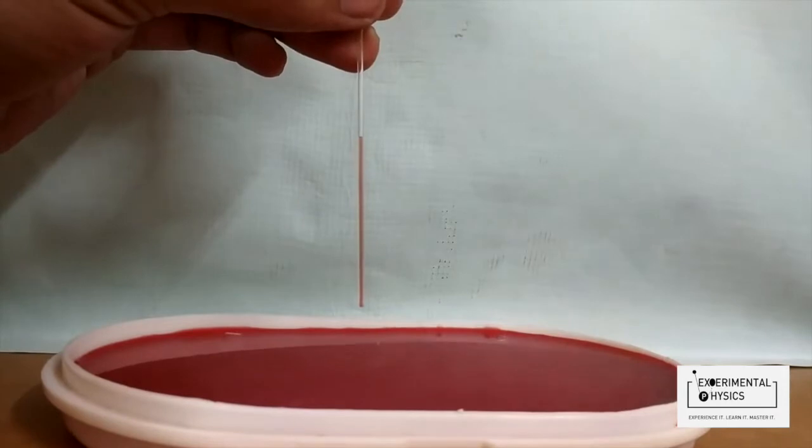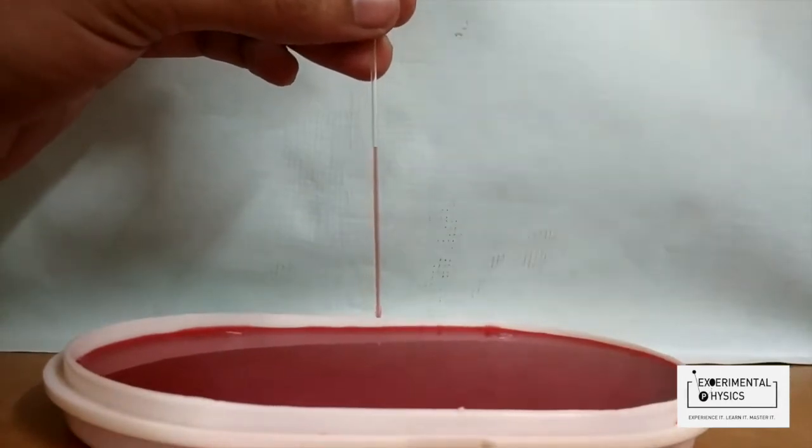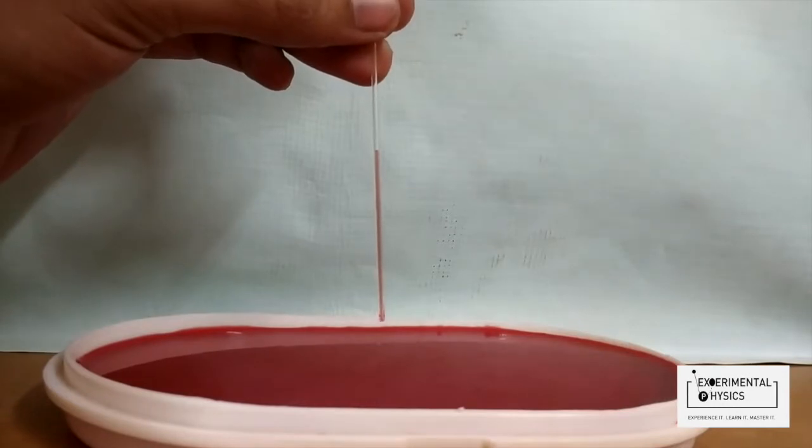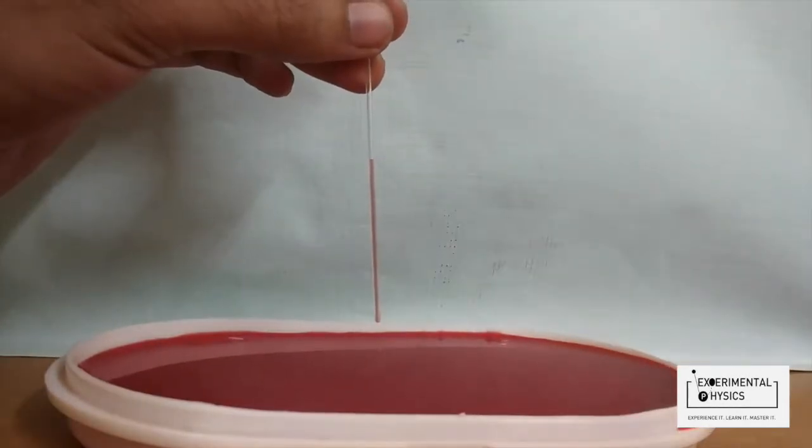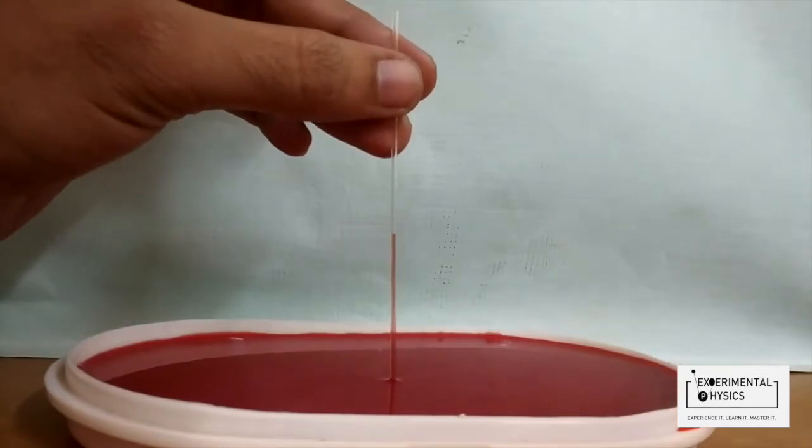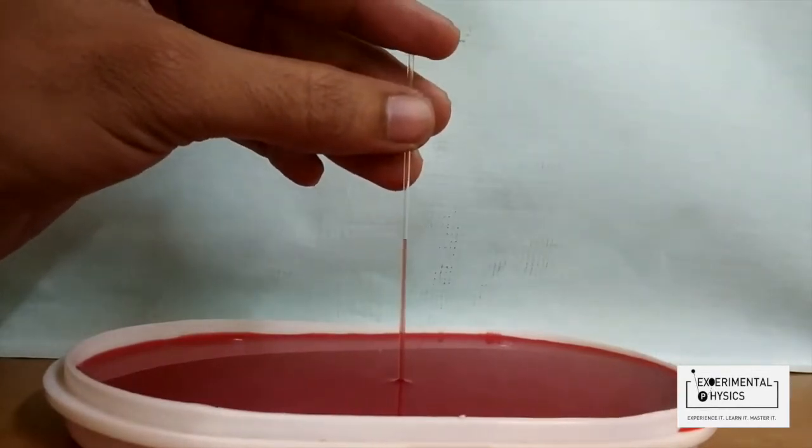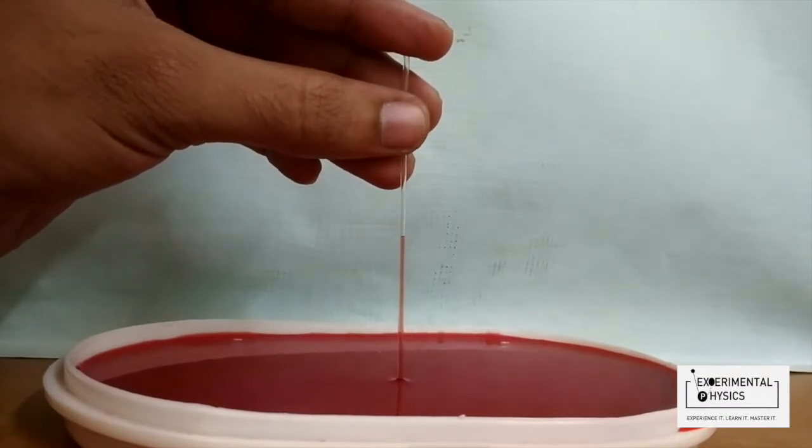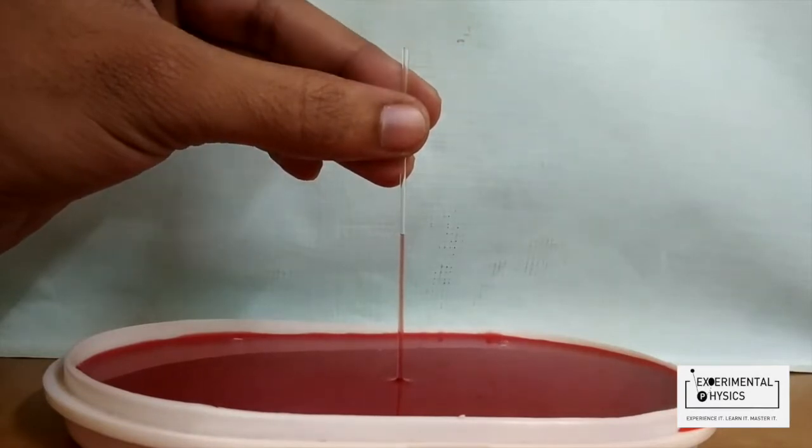Because the surface tension is able to balance the weight of the water which is inside the tube. Let's see what happens when I dip it all the way through. As I dip it, the water level rises such that the height of the water column from the surface of the water remains the same.